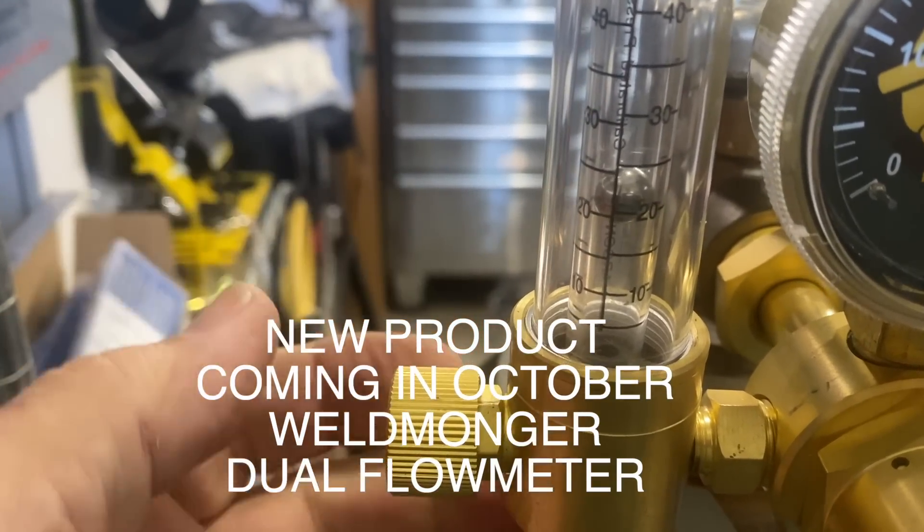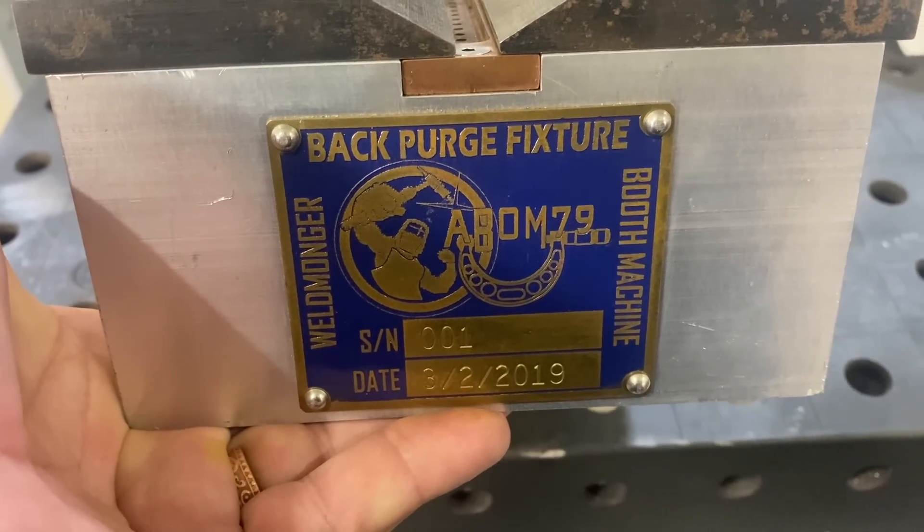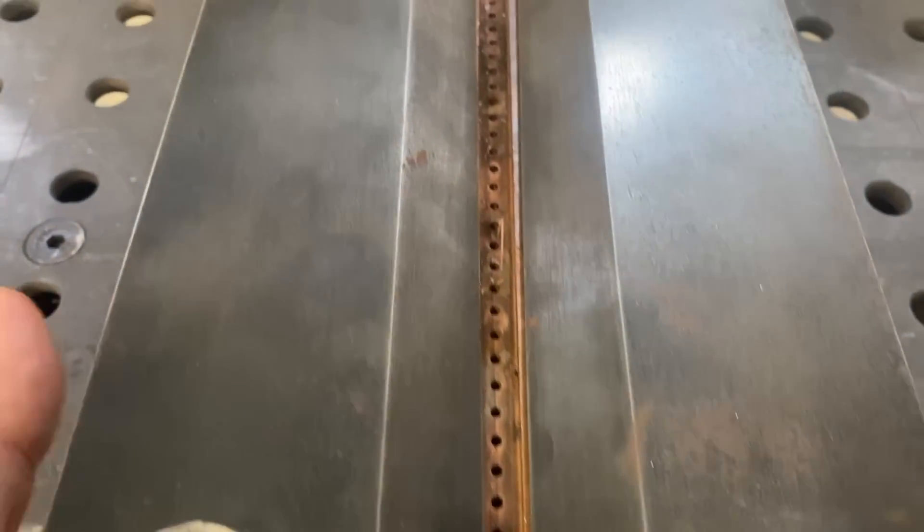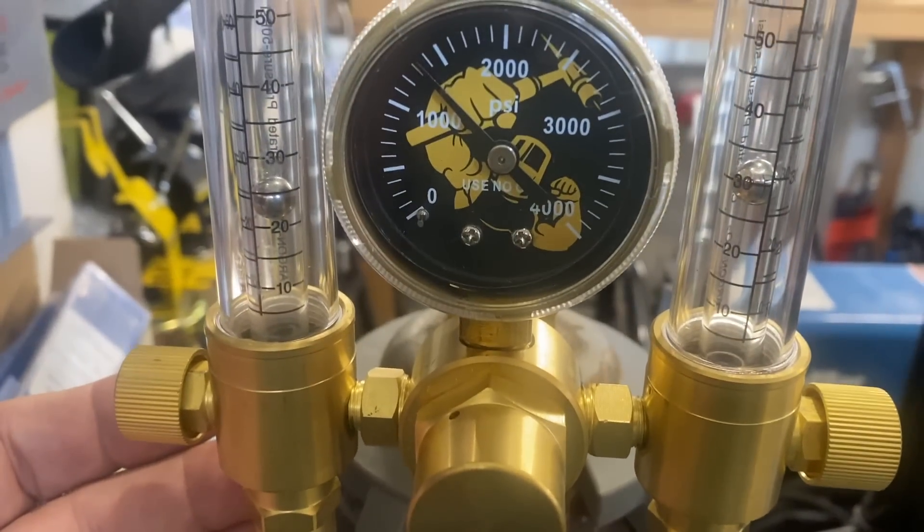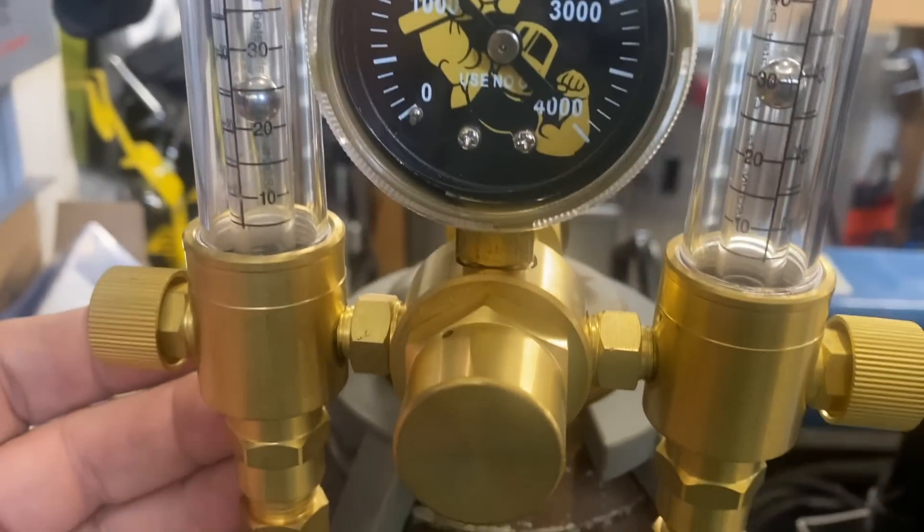Reason for the Dual Flow Meter in this video is I'm doing a little test weld in this back purge fixture. 25 to 30 CFH on the torch gas with the 10 cup, 20 to 25 CFH on the purge gas.